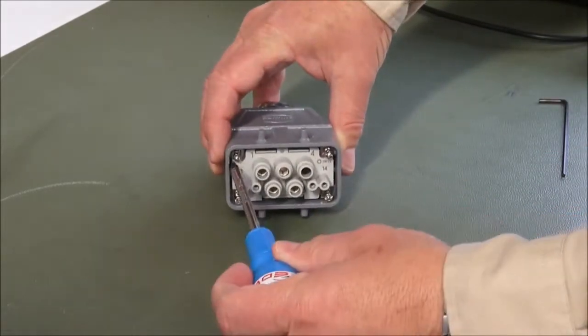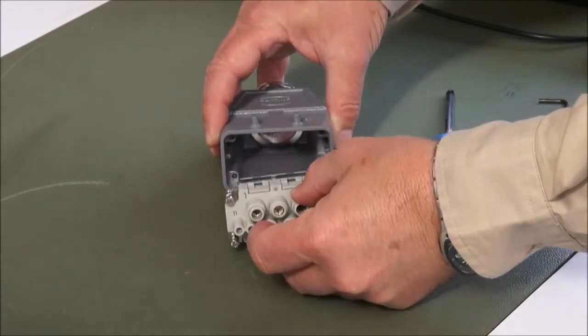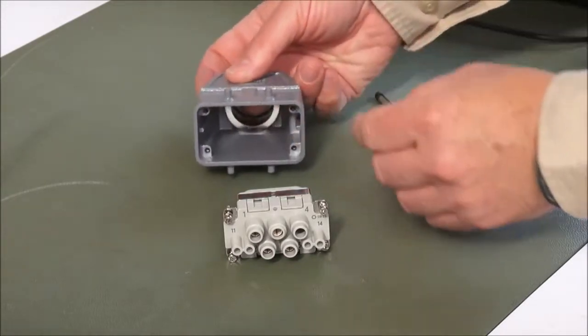The front interface is simply removed in this case by removing the screws here and it pulls away. Obviously you'd feed the cable through the gland at the back of the housing there.